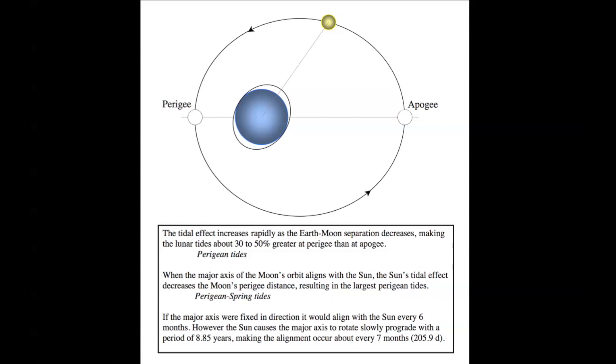If the major axis were fixed, the major axis by the way is through here, perigee to apogee. If the major axis were fixed in direction, it would align with the sun every six months, if you think of Earth going around. However, the sun causes the major axis to rotate slowly prograde, eastward, with a period of 8.85 years, making the alignment occur every seven months. So there's a drift in the direction of the major axis.